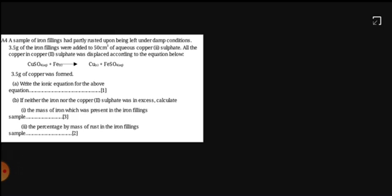A sample of iron filings had partially rusted upon being left under damp conditions. 3.5 grams of the iron filings were added to 50 cubic centimeters of aqueous copper(II) sulfate. All the copper in the copper(II) sulfate was displaced according to the equation below.